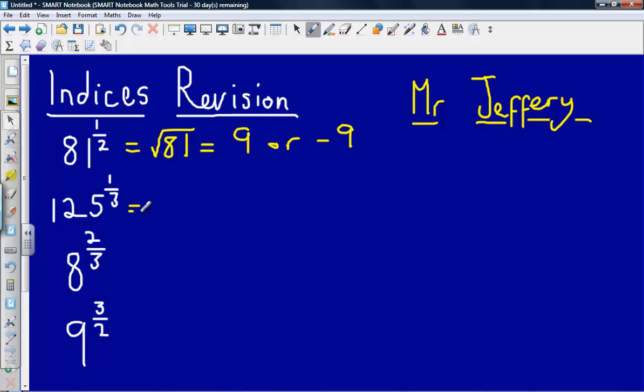125 to the power of one third. This simply means, instead of the square root this time, this means the cube root of a number. So 125 cube rooted gives us an answer of 5. What number has been multiplied by itself and then by itself again to give us 125? The answer there is 5.